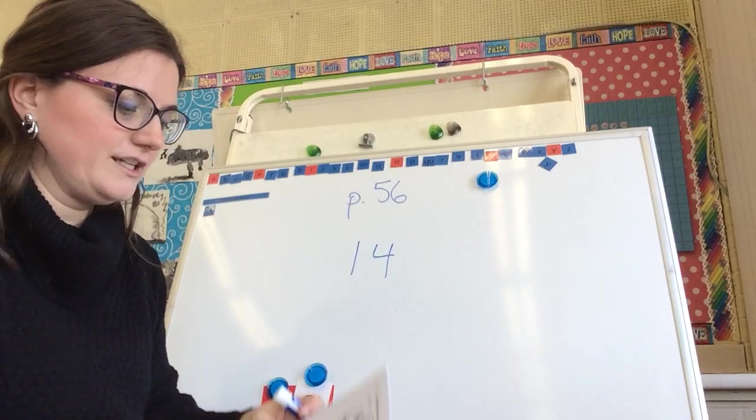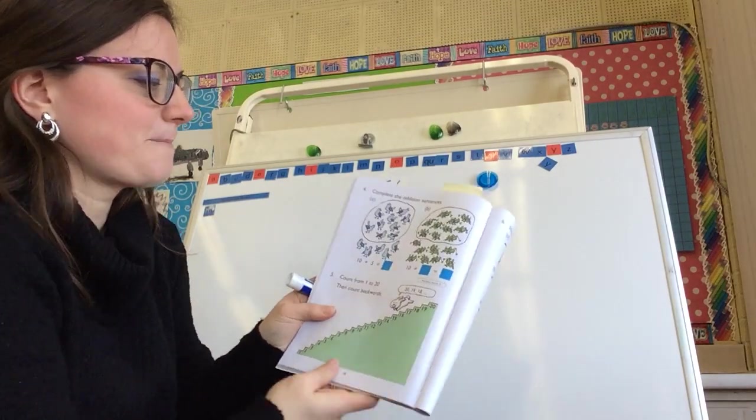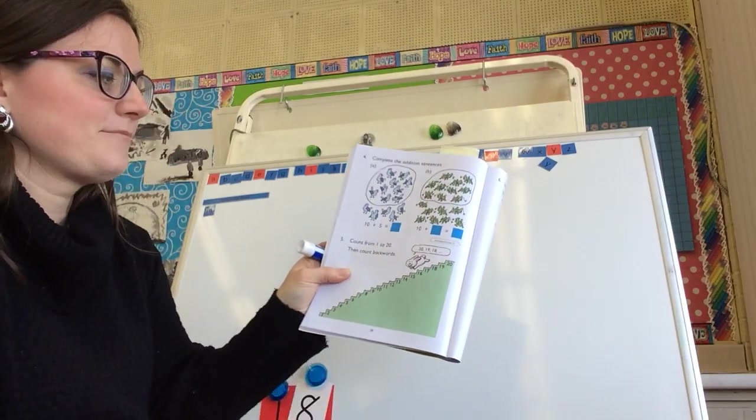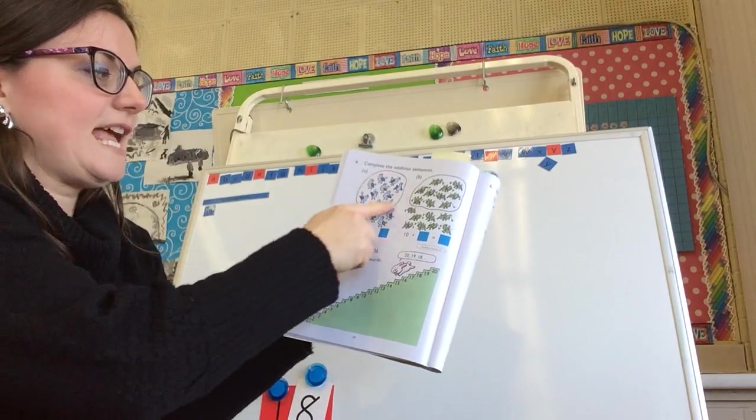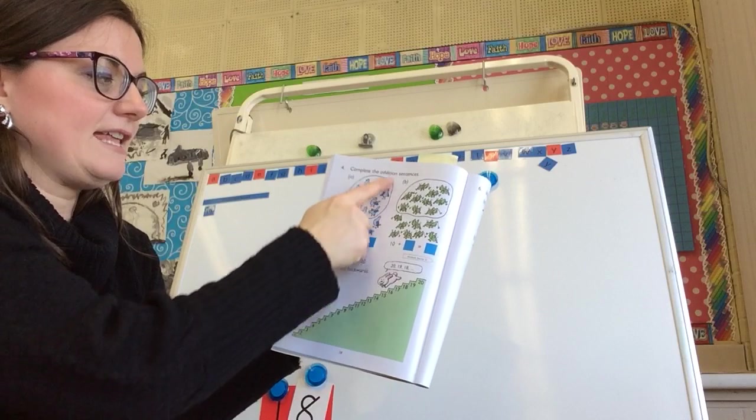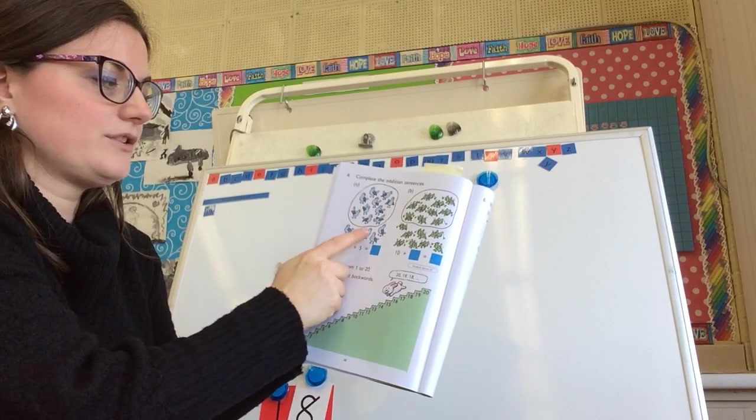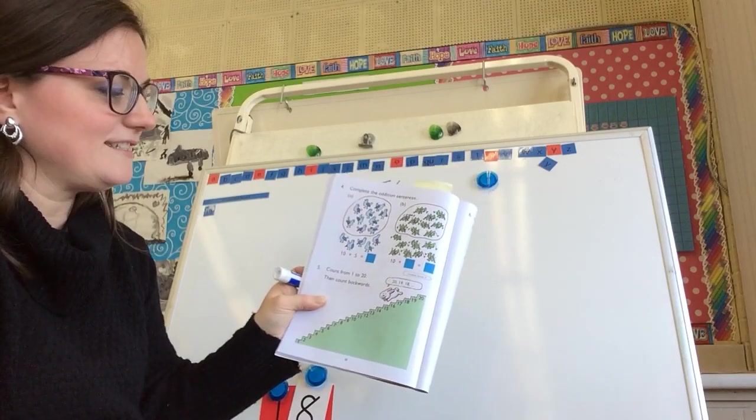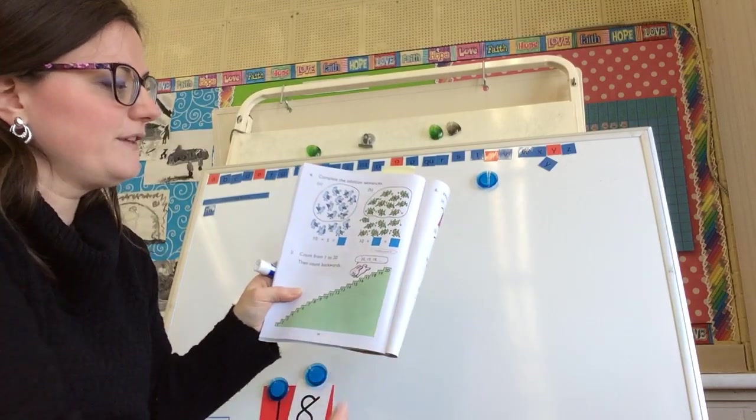Perfect. Turn the page over. We've got some birds. Okay. And we've got a circle around 10 of them. And then we've got 5 more. So 10, 11, 12, 13, 14, 15. A 10 and 5 make 15.